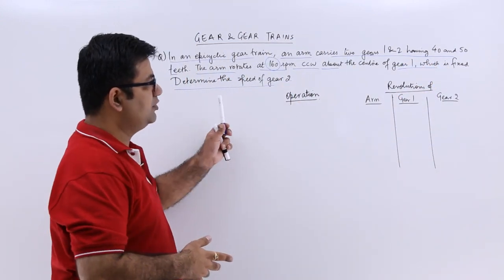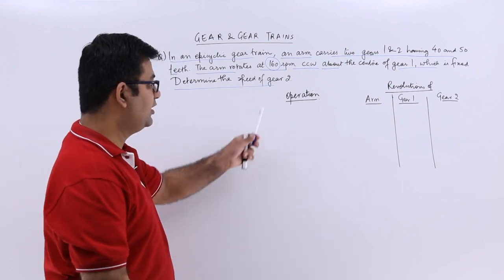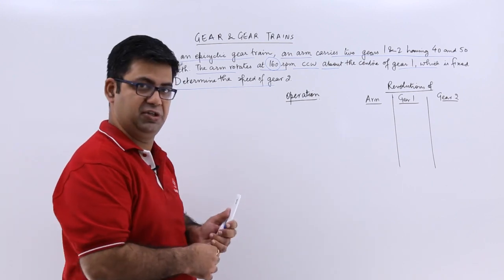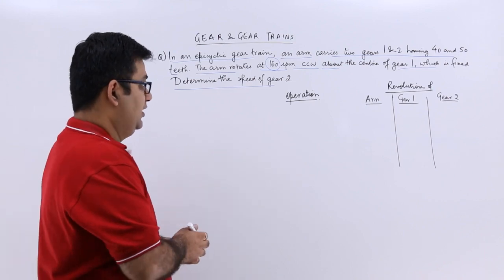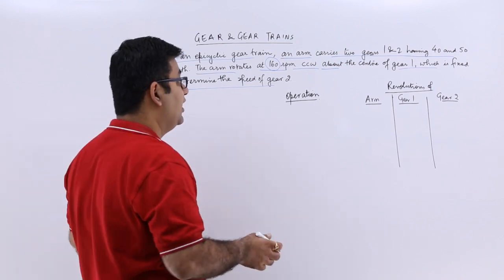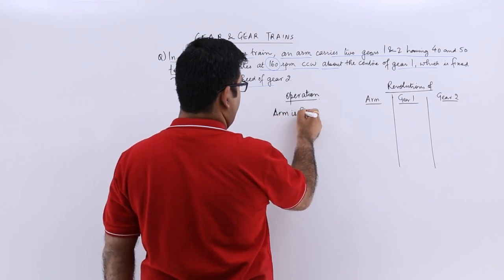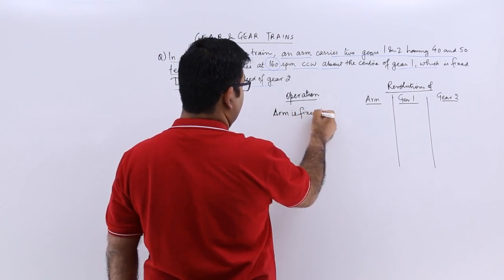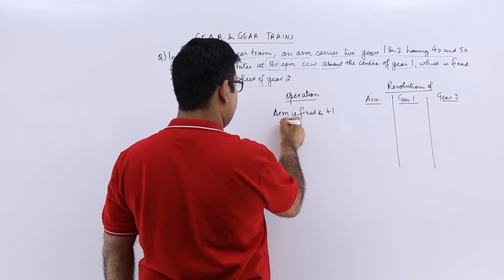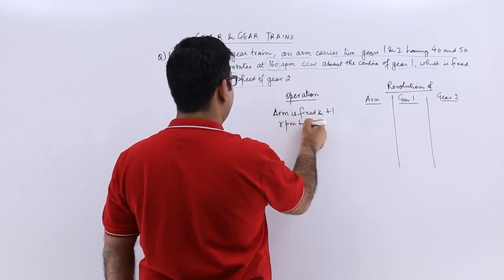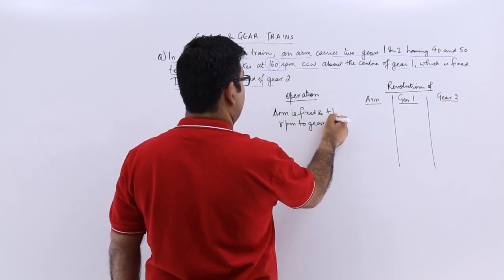So we will do this question with the help of the table. So this is the table in which we have to start with the operations. The very first operation is that arm is fixed and plus 1 rpm to gear 1.